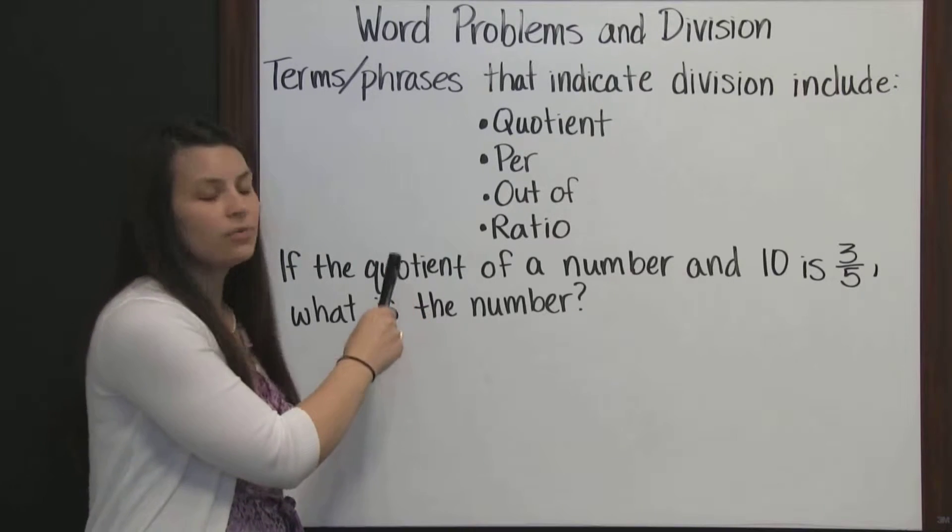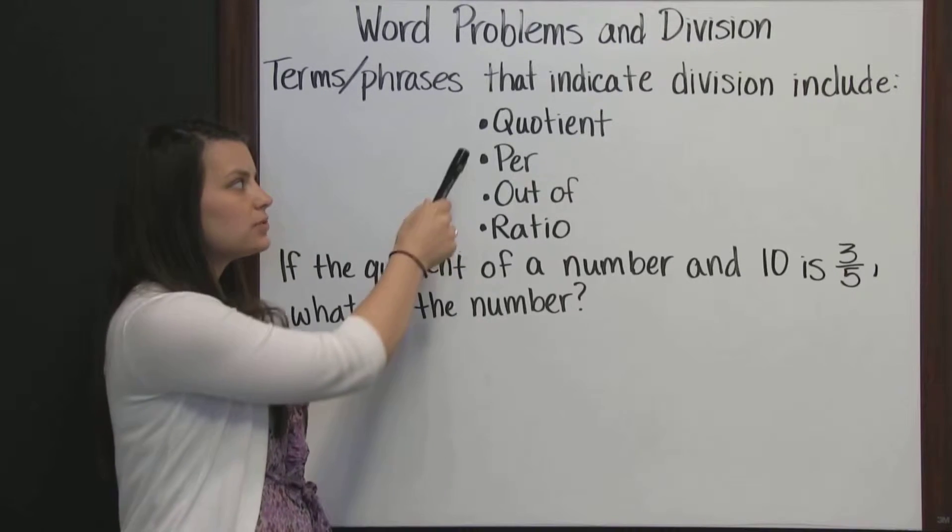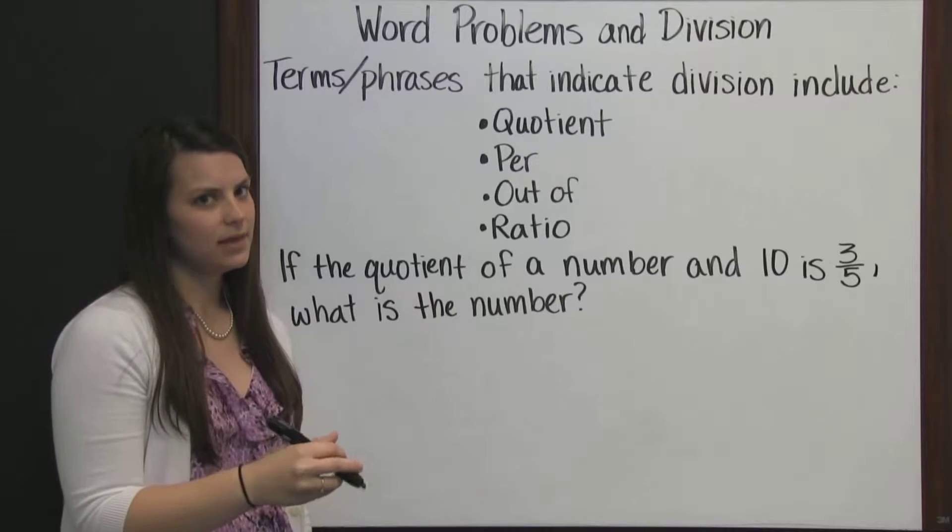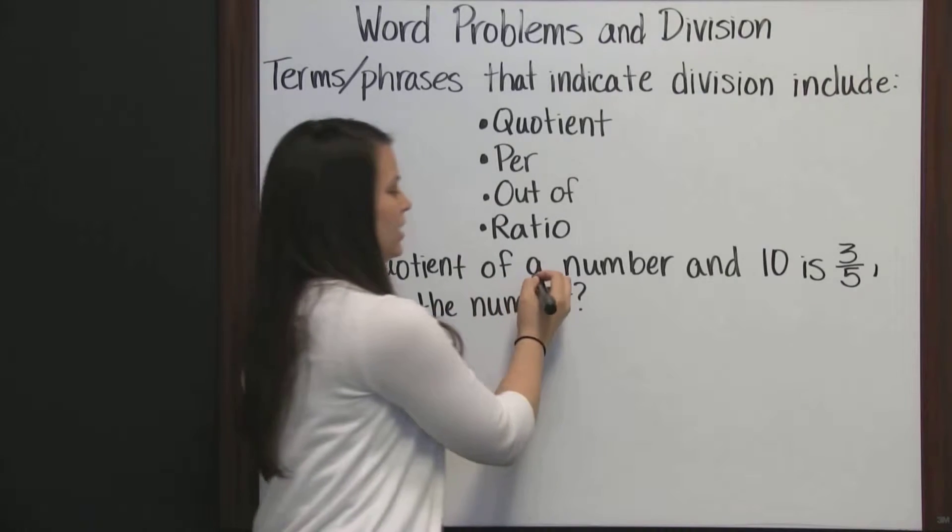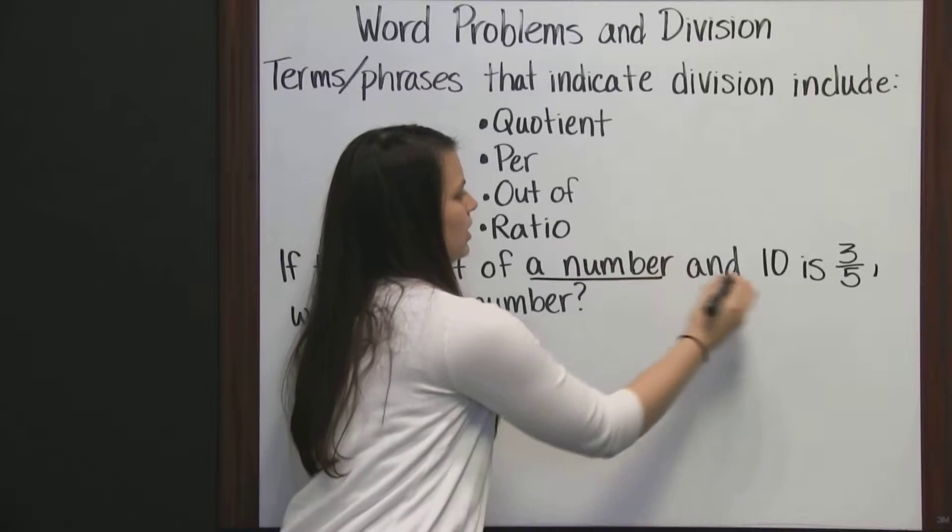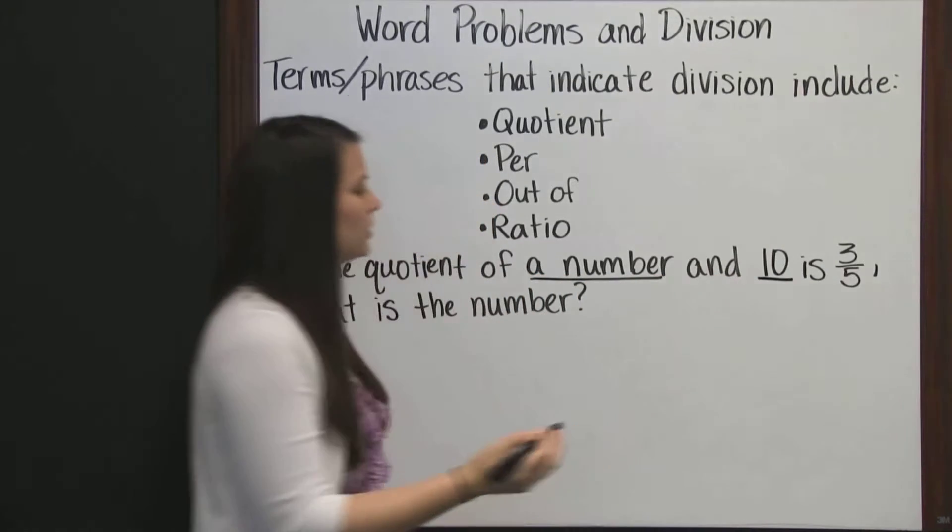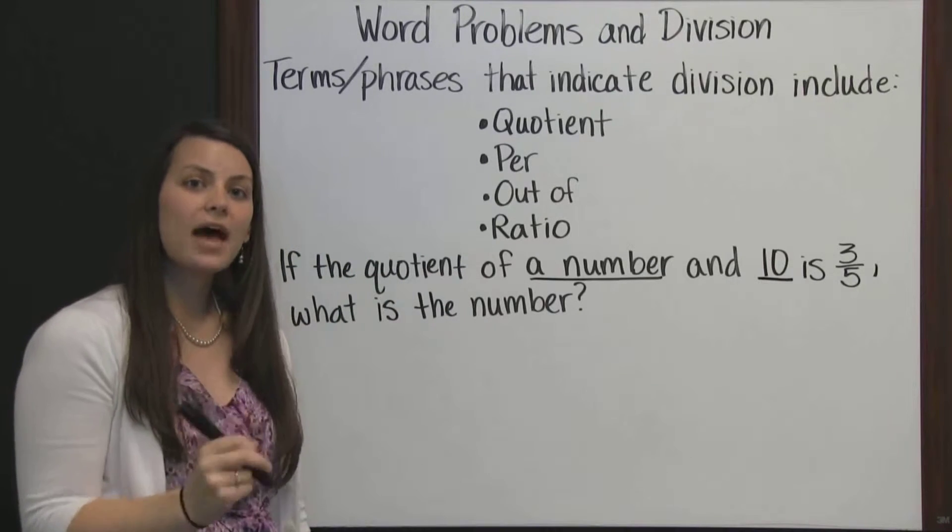So again, we saw that keyword quotient, which tells us we're going to be dividing something. We're going to be dividing two numbers. And those numbers we're dividing are a number and ten. And they must be divided in that order.